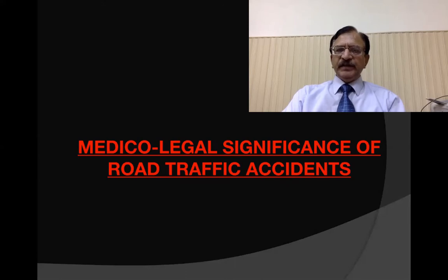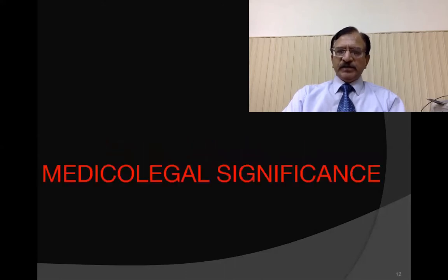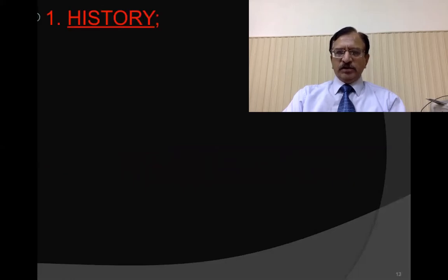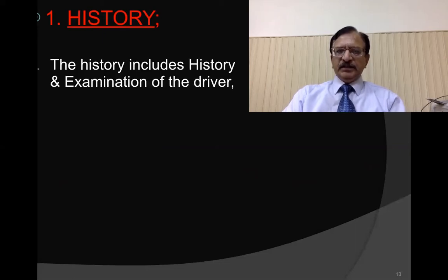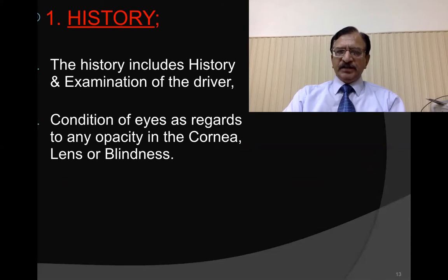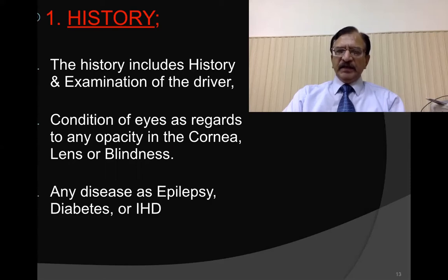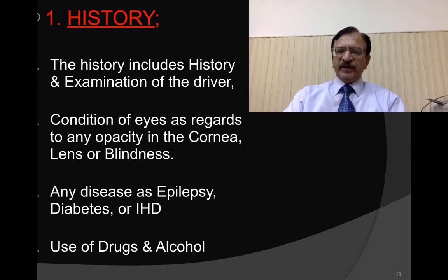Regarding the medico-legal significance of road traffic accidents, we should discuss the detailed history of the incident. This includes examination of the driver — his condition of eyes for any disease such as opacity in the cornea, lens disease, or blindness — and whether he is suffering from epilepsy, diabetes, ischemic heart disease, or is under the influence of drugs or alcohol. A complete history should be gathered.